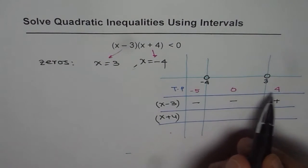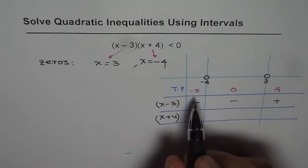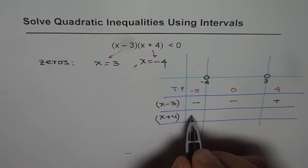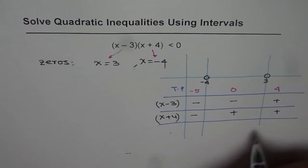Now let us put the same test points in the second factor which is x plus 4. Minus 5 plus 4 is negative. 0 plus 4 is positive. And 4 plus 4 will be positive.